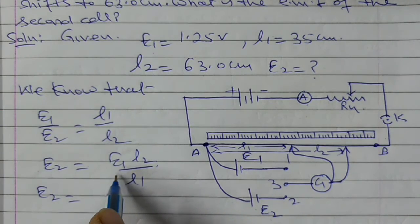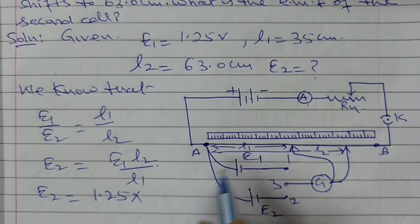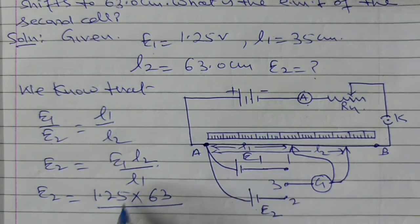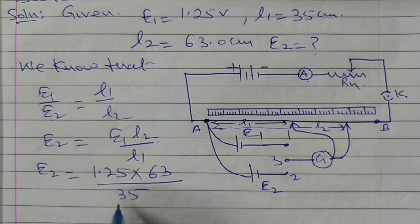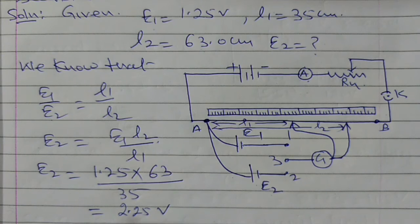Now on putting the values, E1 equals, this E1 is 1.25 versus L2, L2 is 63 upon L1 is 35. Therefore on solving this, E2 equals 2.25 volt. Therefore this is the value of the EMF of the second cell.